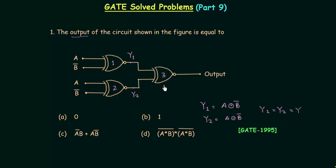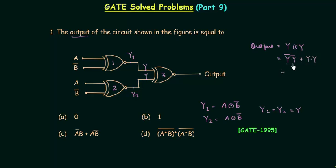For the third XNOR gate, the two inputs are both y — the same input fed twice. When we feed the same input to an XNOR gate, the output equals 1. Let's prove this: output = y XNOR y, which expands to (y' AND y') OR (y AND y) = y' OR y = 1.